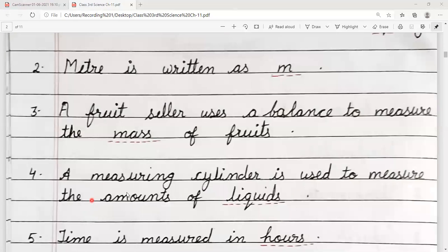Number 4, a measuring cylinder is used to measure the amount of dash. Measuring cylinder... Liquids. Answer is liquids.